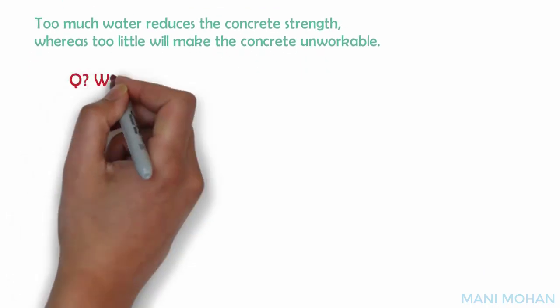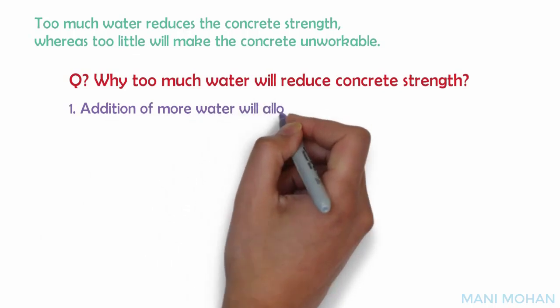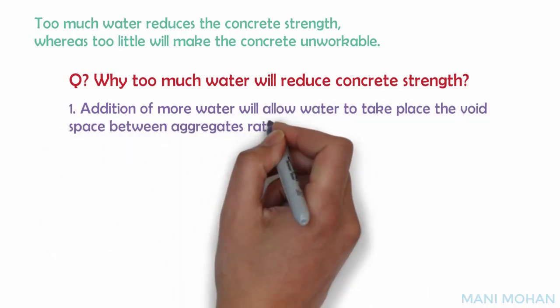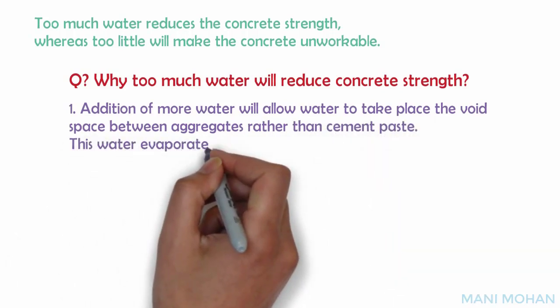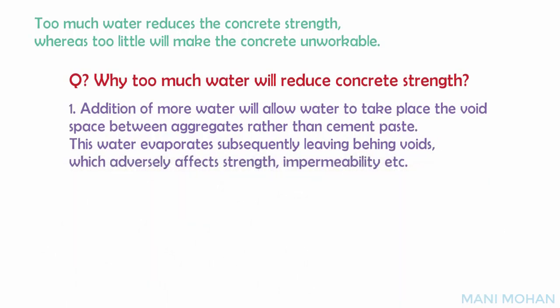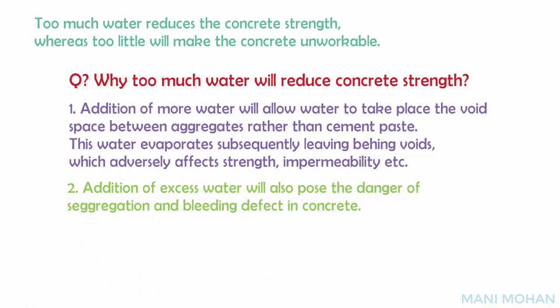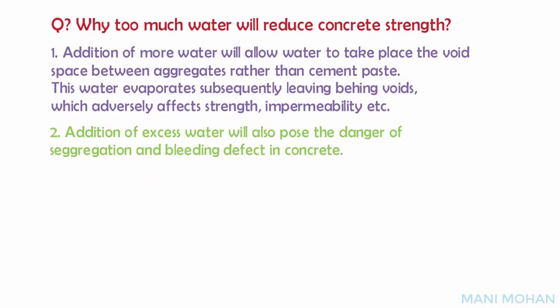Why does too much water reduce concrete strength? Addition of more water allows water to occupy the void space between aggregates rather than cement paste. This water evaporates subsequently, leaving behind voids which adversely affect strength, impermeability, etc. Moreover, there is the danger of segregation of grout — grout being cement plus water — in a very wet mix, in addition to bleeding, which is the tendency of excess water to rise to the surface of fresh concrete mix as the solid constituents settle downwards.